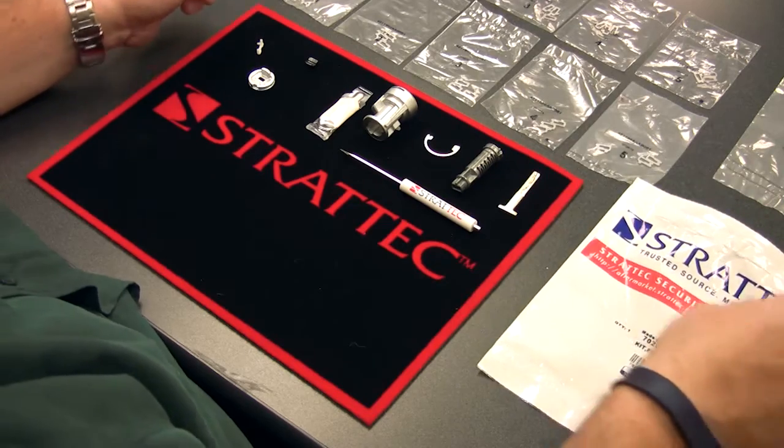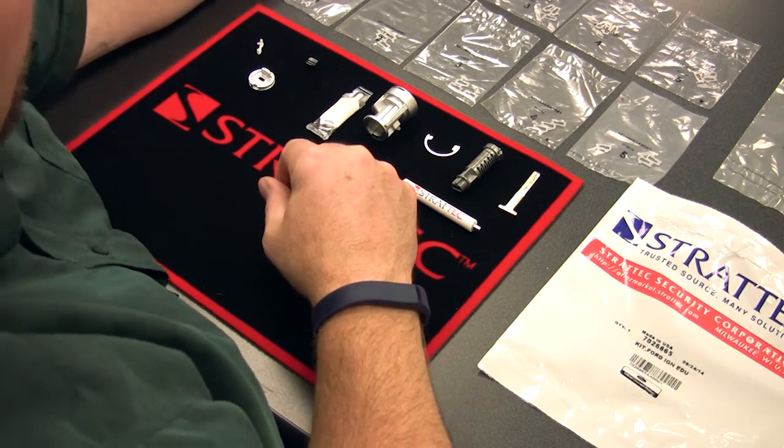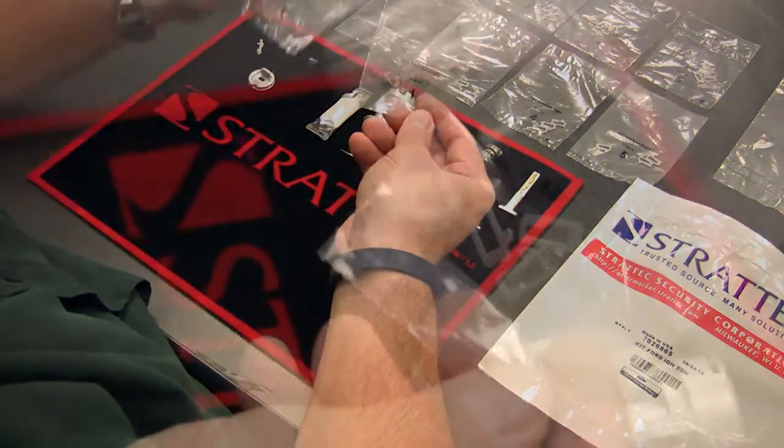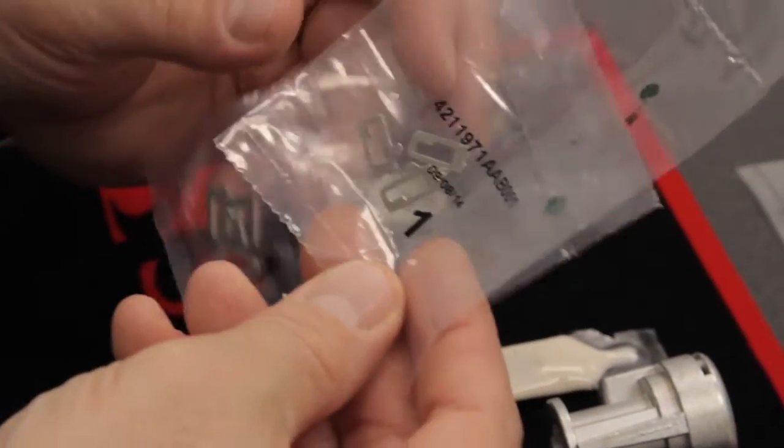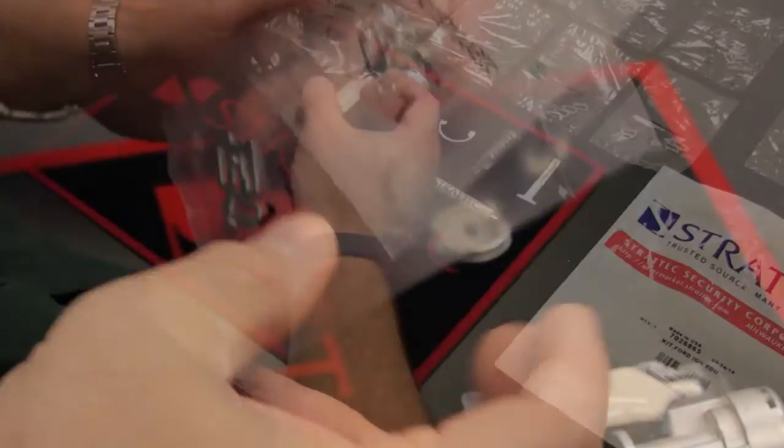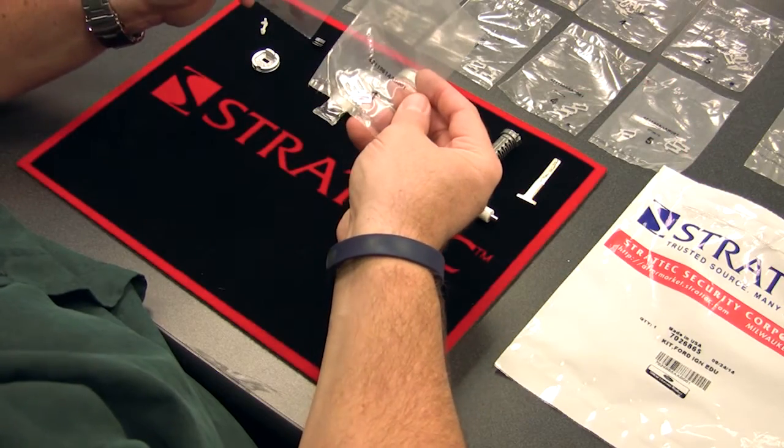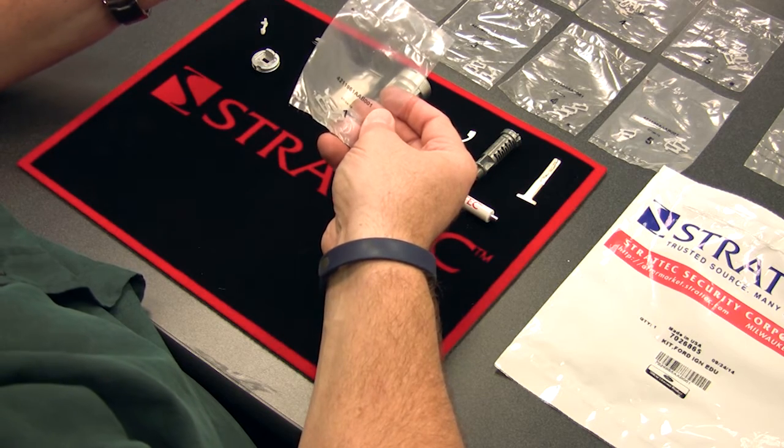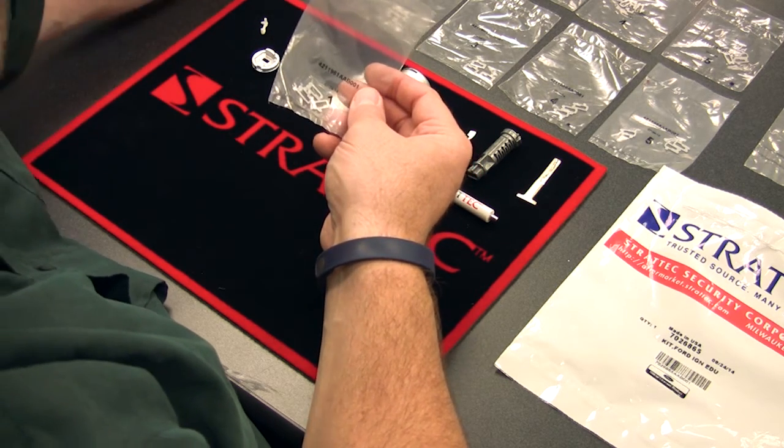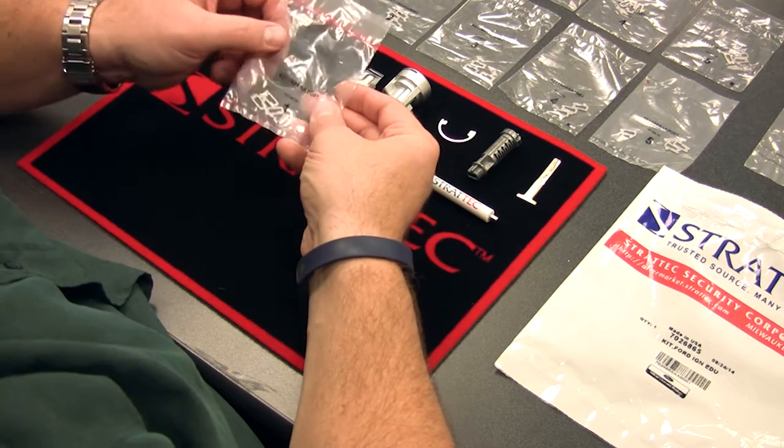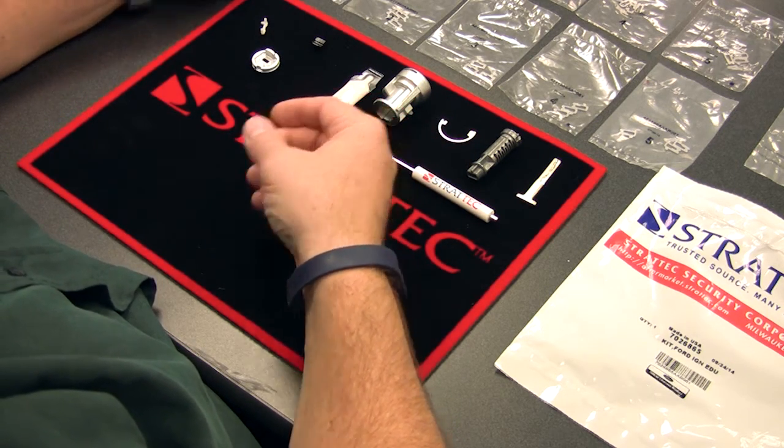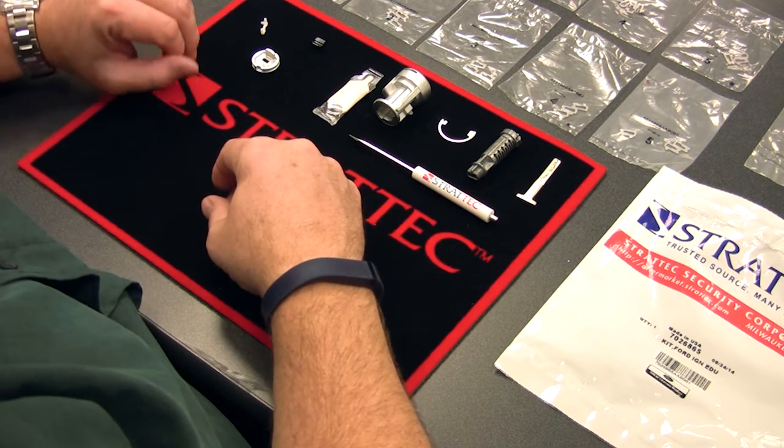What we have is the typical repair kit setup, which I'll show you a couple of tumbler packs. This ignition is a 10-cut ignition, and so it will utilize all 10 cuts. And they're left and right tumblers, so it's comprised of bags of tumblers, one through five on the left hand and one through five on right hand tumblers.